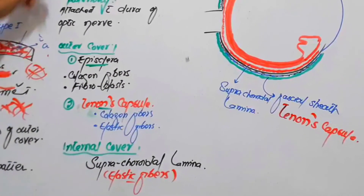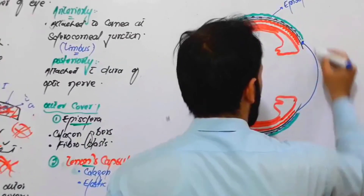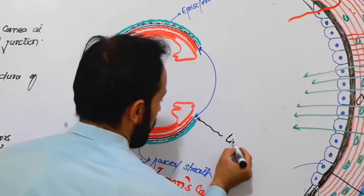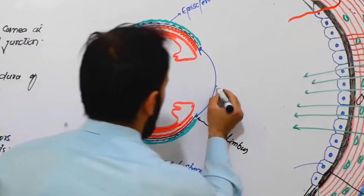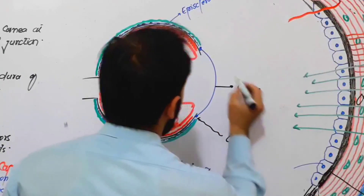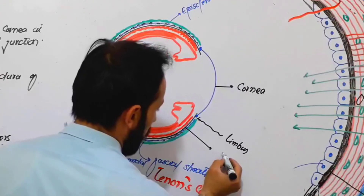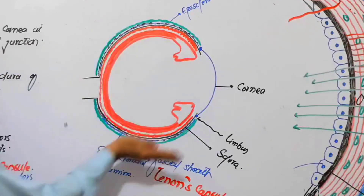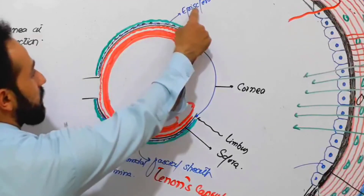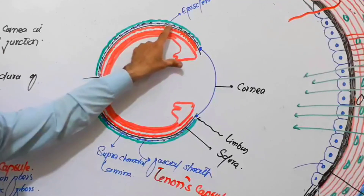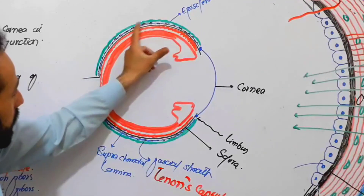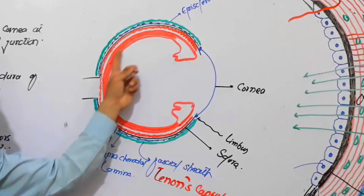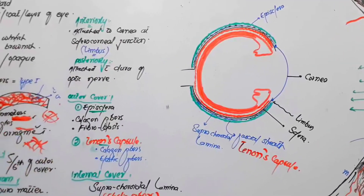So, from outside to inside: the Tenon's capsule is the green cover outer to the sclera and episclera. Below the Tenon's capsule is the episclera. Below the episclera is the sclera. Below the sclera is the supra-choroidal lamina. And below the supra-choroidal lamina is the choroid.